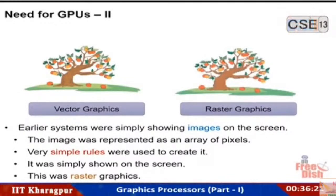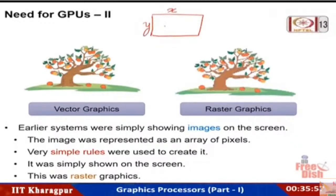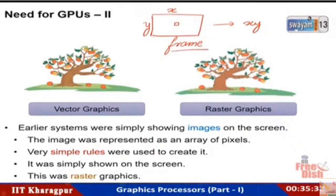GPUs are used for many things. To understand them we need to understand modern graphics systems. Compared to 30 years ago, when screens were thought of as simple arrays of pixels with each element assigned a color — a frame — that needed to be recomputed 30 to 50 times per second. Most of the time the array remained constant and was only updated when a change occurred.